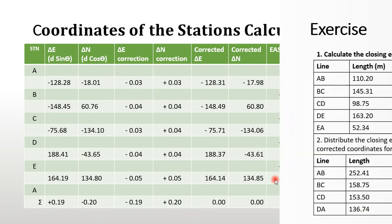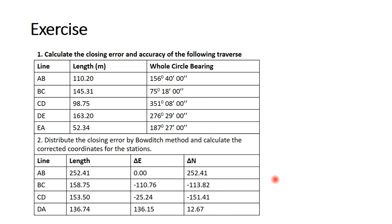To see whether you have understood what we discussed today, you should try the following problems. Problem one: calculate the closing error and accuracy for the following traversy. You have traversy lines AB, BC, CD, and EA. AB is 110 with a bearing of 156 degrees 40 minutes 00 seconds. The internal angle summation check has already been done and bearings are given for each traversy leg, so you just need to work out the change in eastings and northings. Problem two: distribute the closing error by the Bowditch method and calculate the corrected coordinates for the stations.